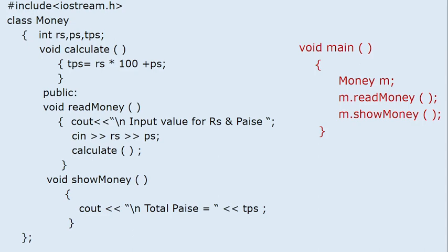In the main program, we are creating object M. Whenever object M is created, the compiler will create one object M with member variables RS, PS, and TPS (total paise). First it creates the object. When the read money statement is executed, it goes to execute read money with respect to object M, giving you a blinking cursor for input of RS and PS.